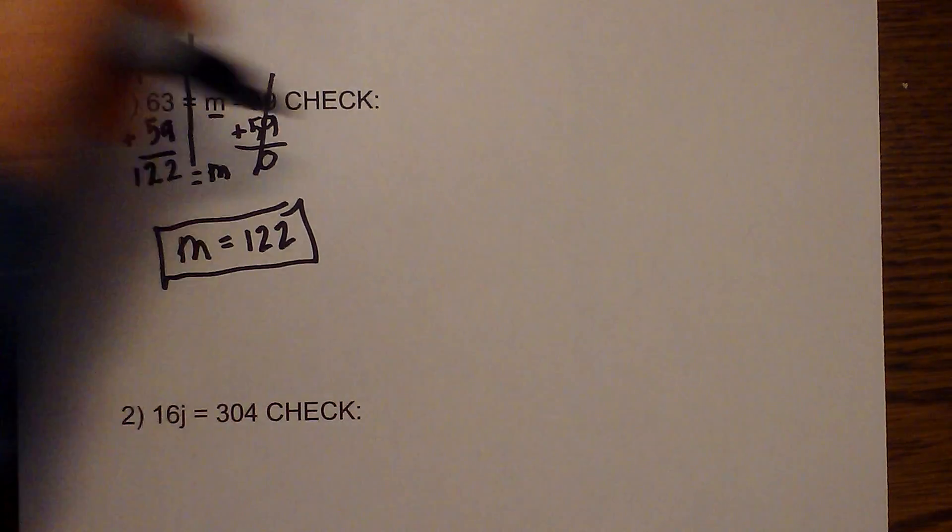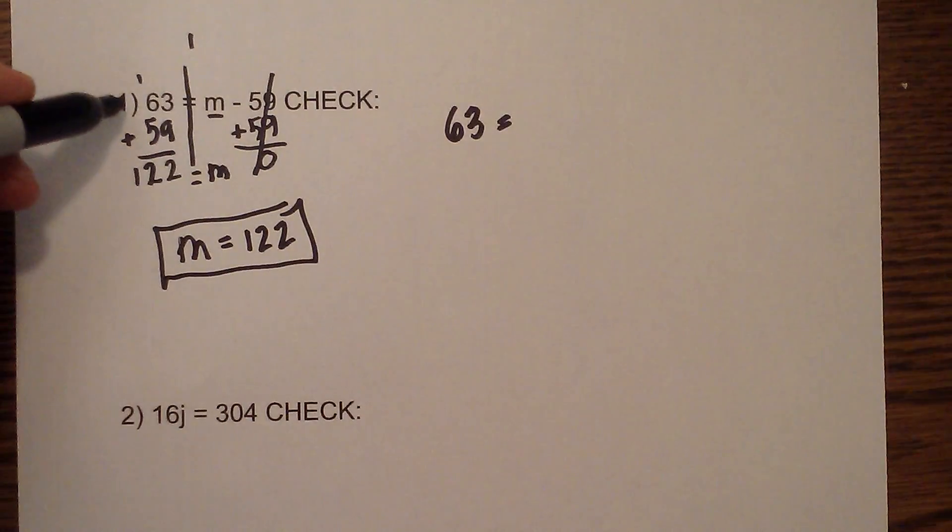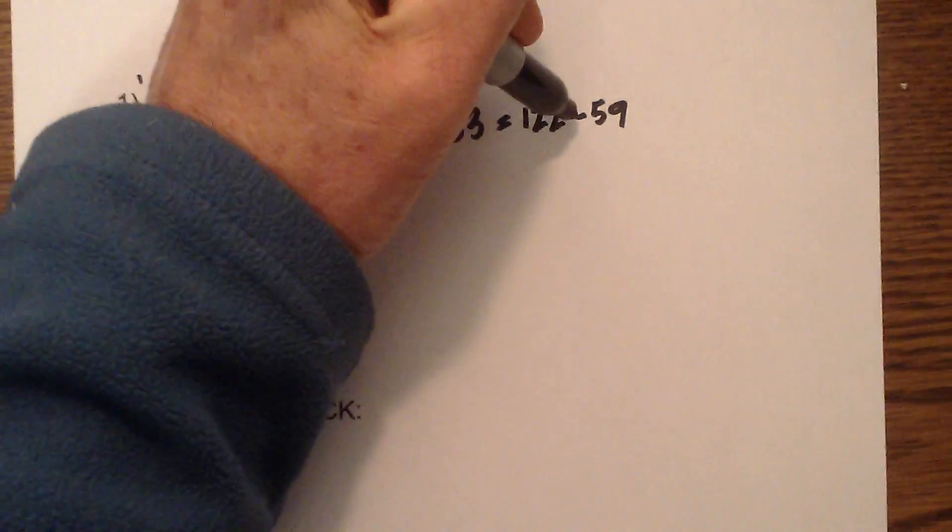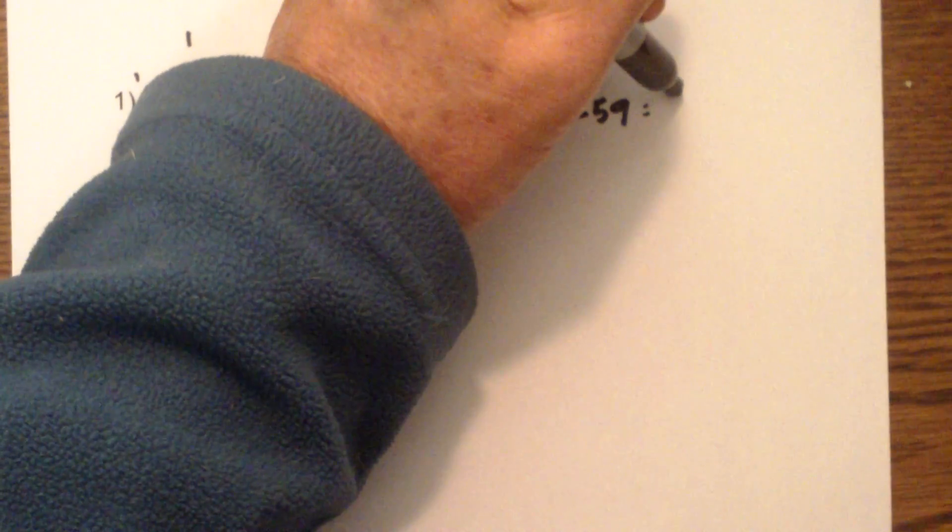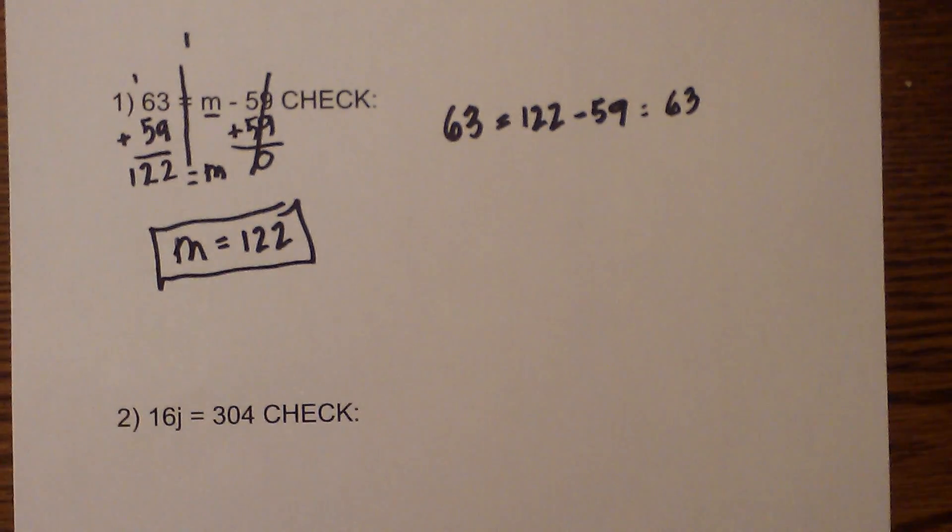Okay, now let's check our work. I'm going to add it into the original equation: 63 equals 122 minus 59, and if you take 122 minus 59 that is indeed 63. Okay so that works out.